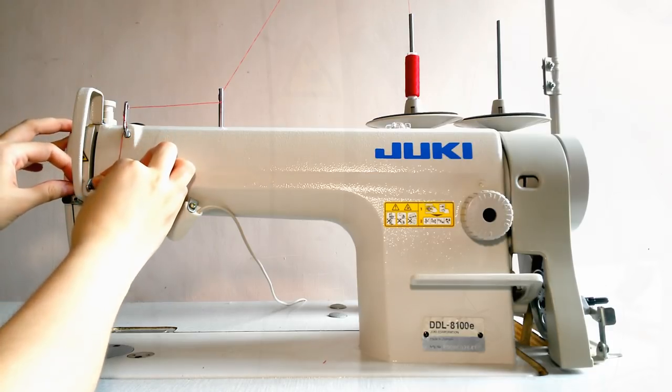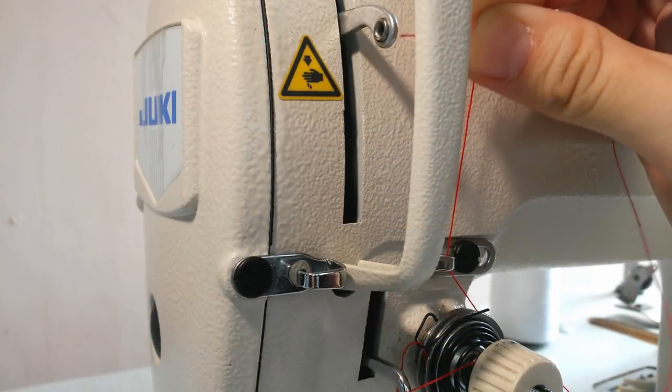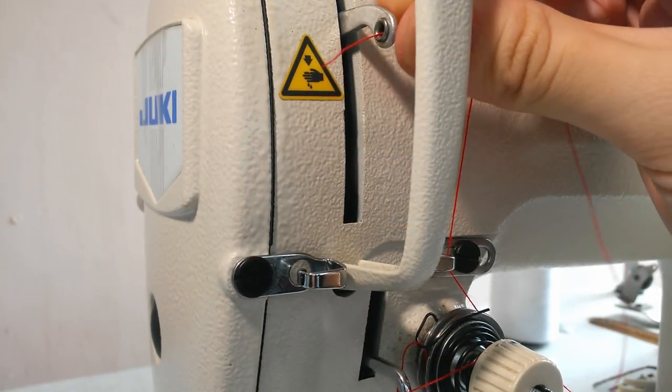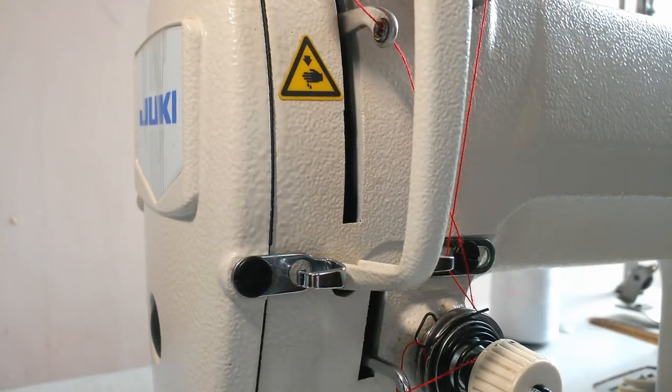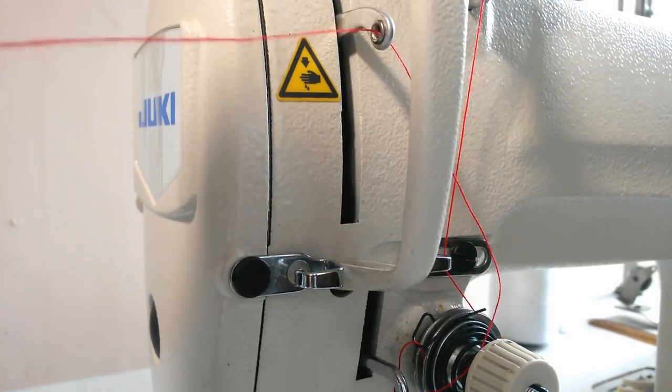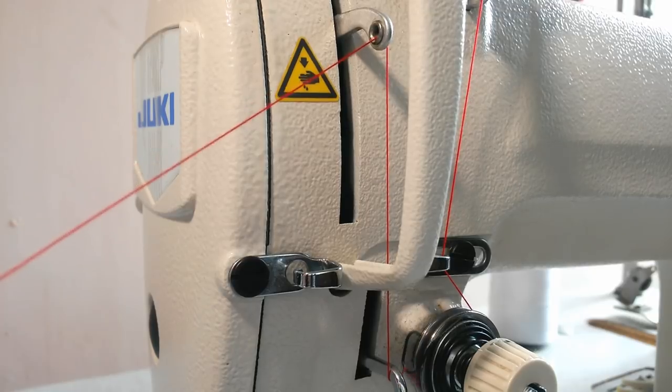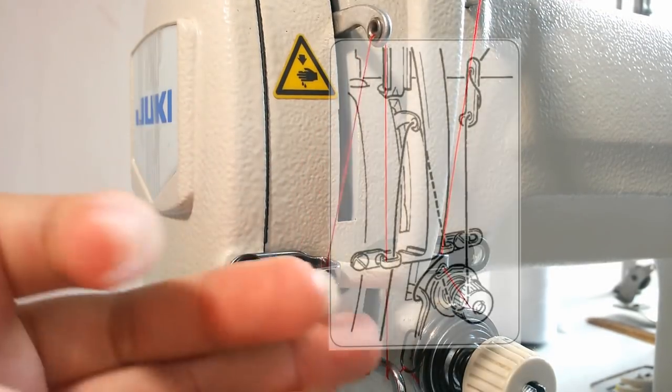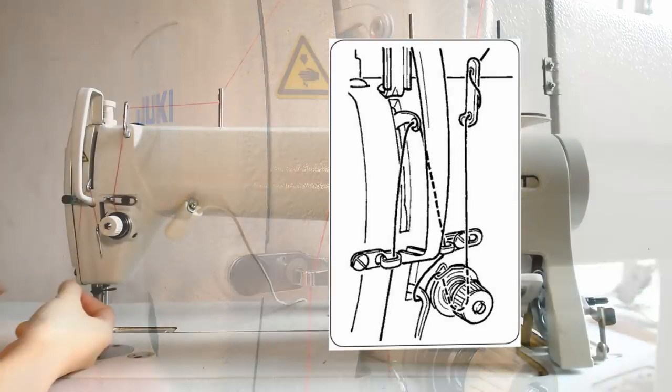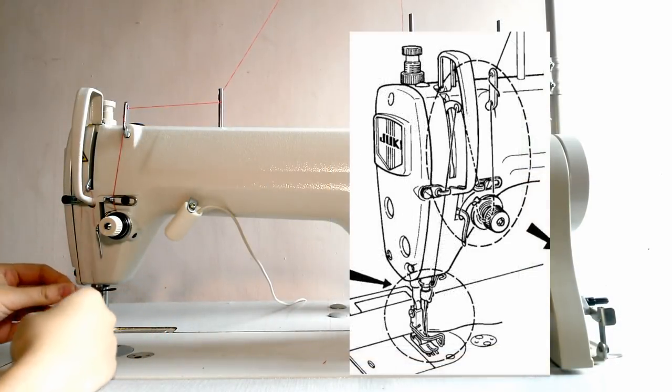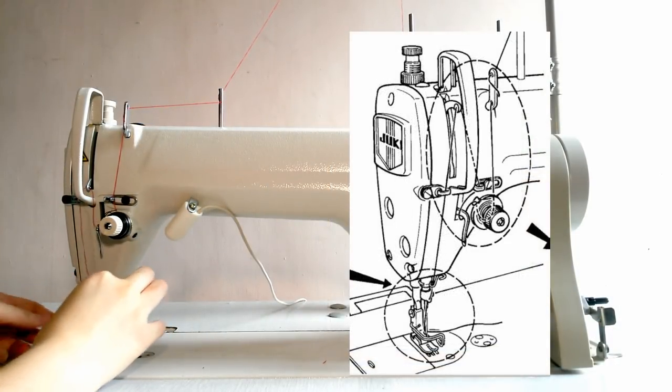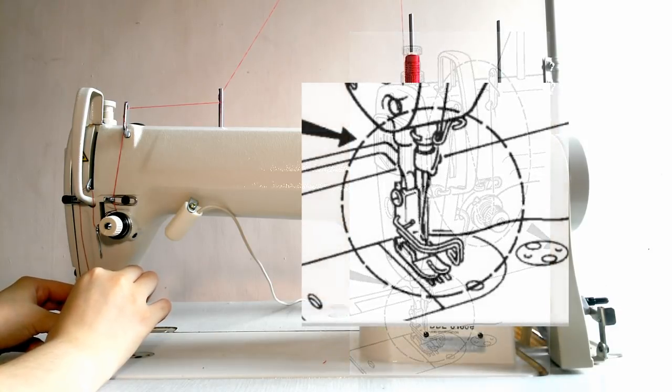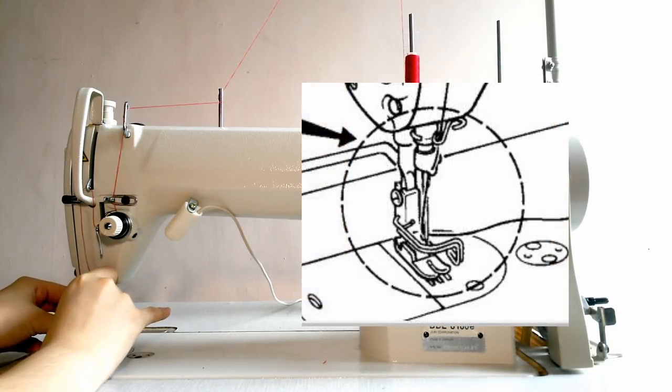After that, the thread goes in here. At this point, the setup should look like this, out from the curved line of the DB needle.